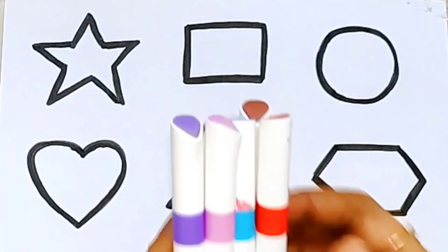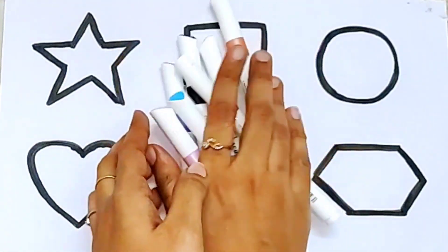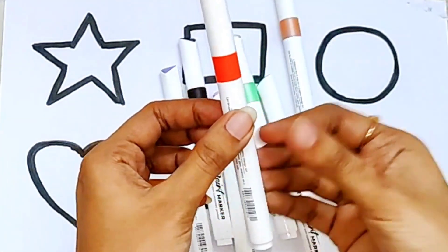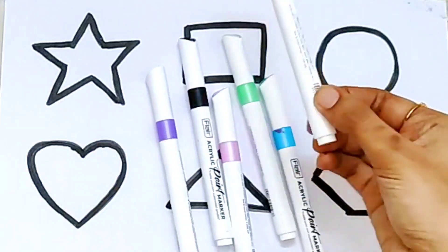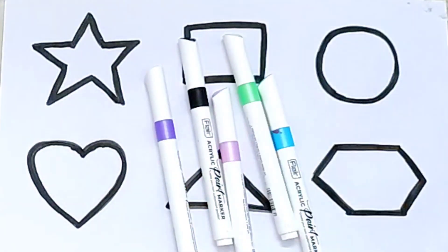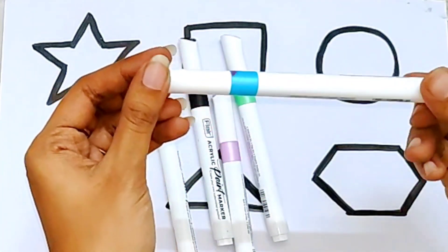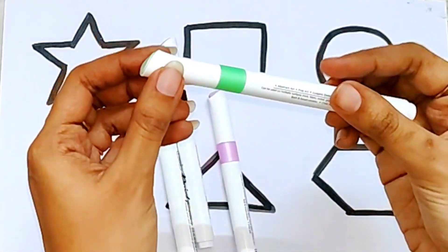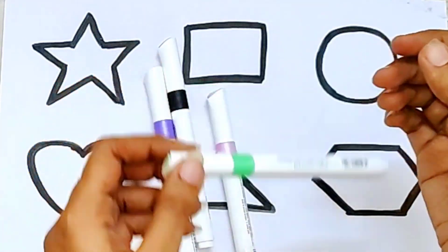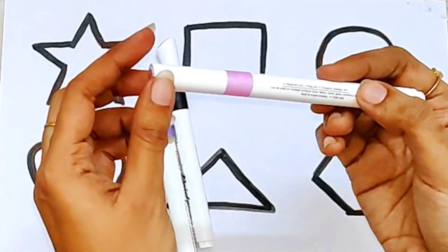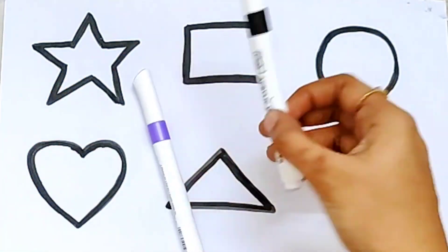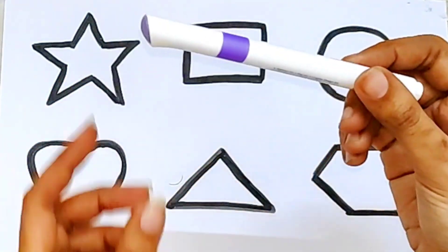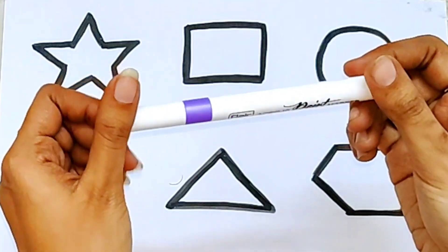Let's learn some colors. Orange color. Sandal color. This is light blue color. This is light green color. This is pink color. This is black color. And this is purple color.